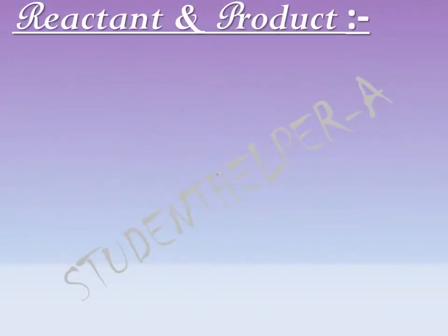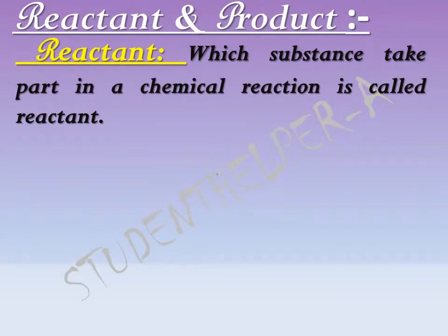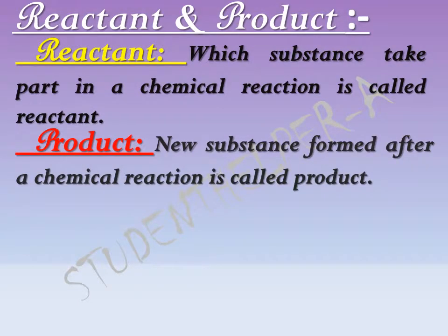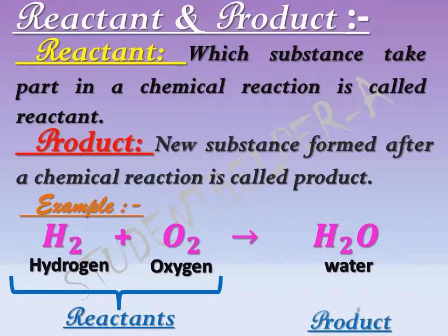Reactant and product. Reactant: the substance that takes part in a chemical reaction is called a reactant. Product: the new substance formed after a chemical reaction is called a product. Example: H2 reacts with O2 to give H2O — that is, hydrogen reacts with oxygen to give water. Hydrogen and oxygen are the reactants, and water is the product.